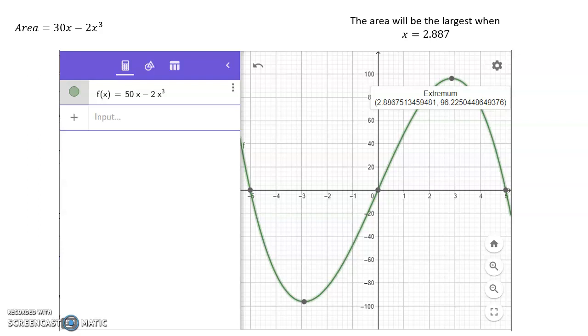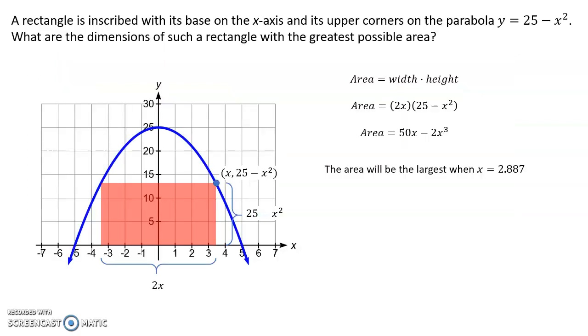So now let's go back to our rectangle. We said that the area was 50x minus 2x cubed. We just figured out that the area will be largest when x is about 2.887. And so then relating that back to our formula, at that x value, the width would be 2x. So 2 times 2.887 is about 5.774.